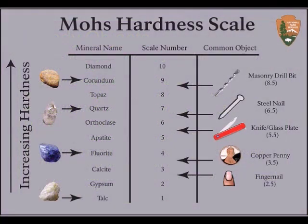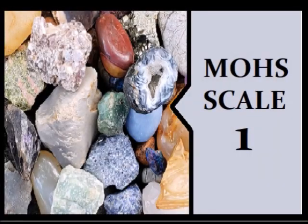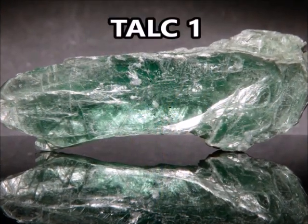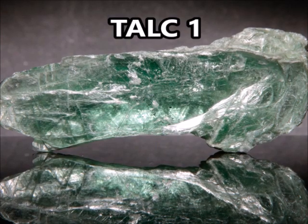Minerals are calculated from 1, the softest, to 10, the hardest, on the Mohs scale. Let us begin. Mohs scale 1 — at level 1 we have talc.